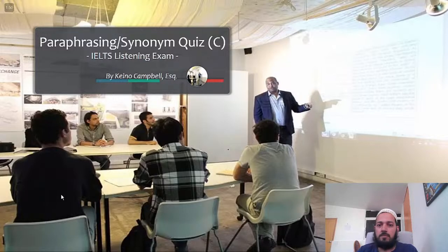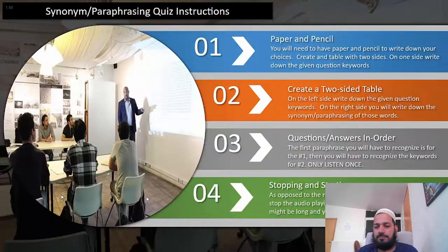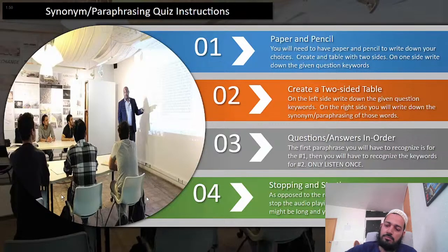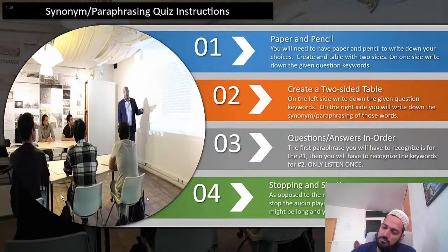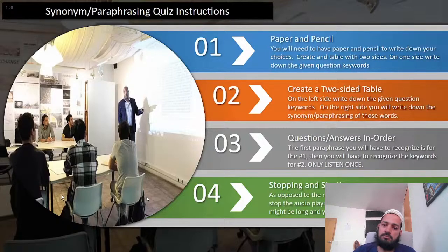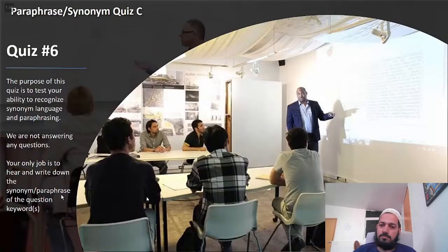Let's go ahead and do quiz letter C. You need paper and pencil to create a two-sided table: on the left, the question keywords; on the right, the synonyms and paraphrasing you hear. Questions and answers go in order because the exam goes in order. Stopping and starting is fine here — on the real exam you cannot do that. We are not answering questions; our focus is synonym and paraphrase recognition. Let's move into quiz number six.